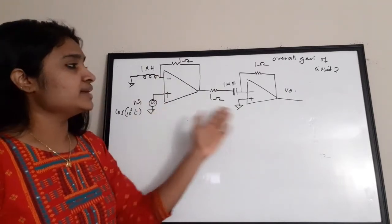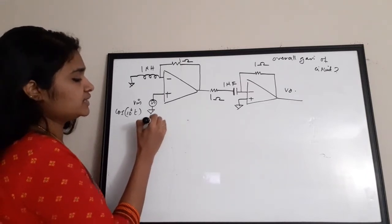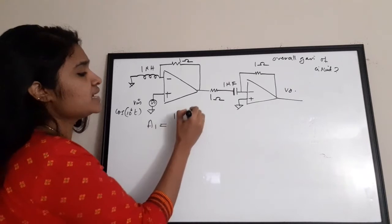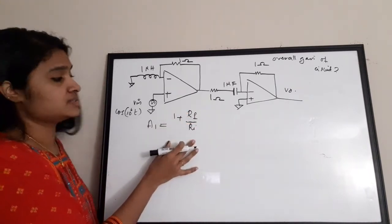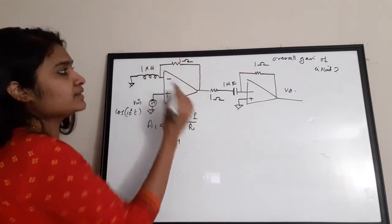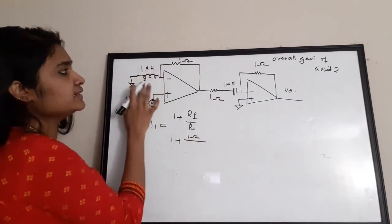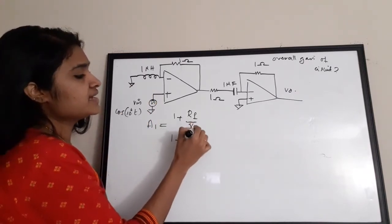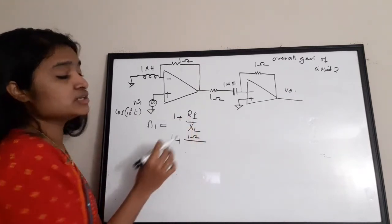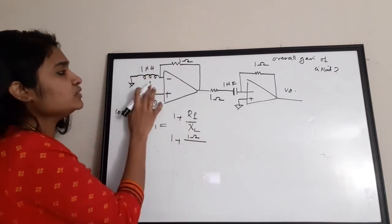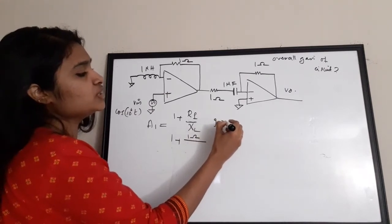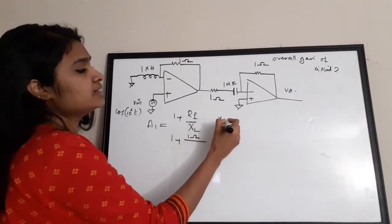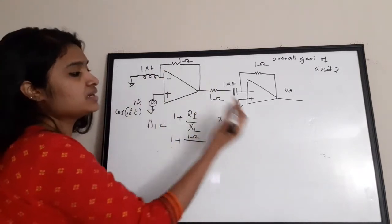We treat this as two stages. Stage 1 gain A1: since it is a non-inverting amplifier, A1 = 1 + Rf/Ri. Here Rf = 1Ω, and in place of Ri there is a 1 µH inductor, so we use its reactance XL = jωL. With ω = 10⁶ rad/s and L = 1 µH: XL = j × 10⁶ × 1×10⁻⁶ = j.